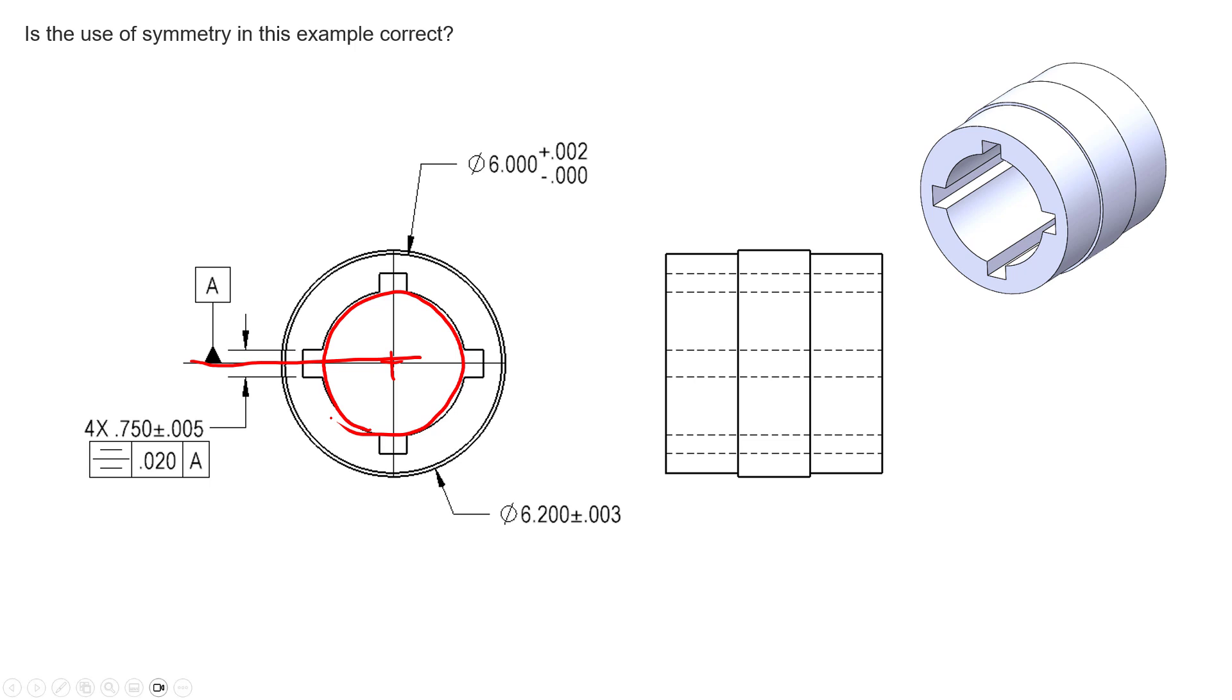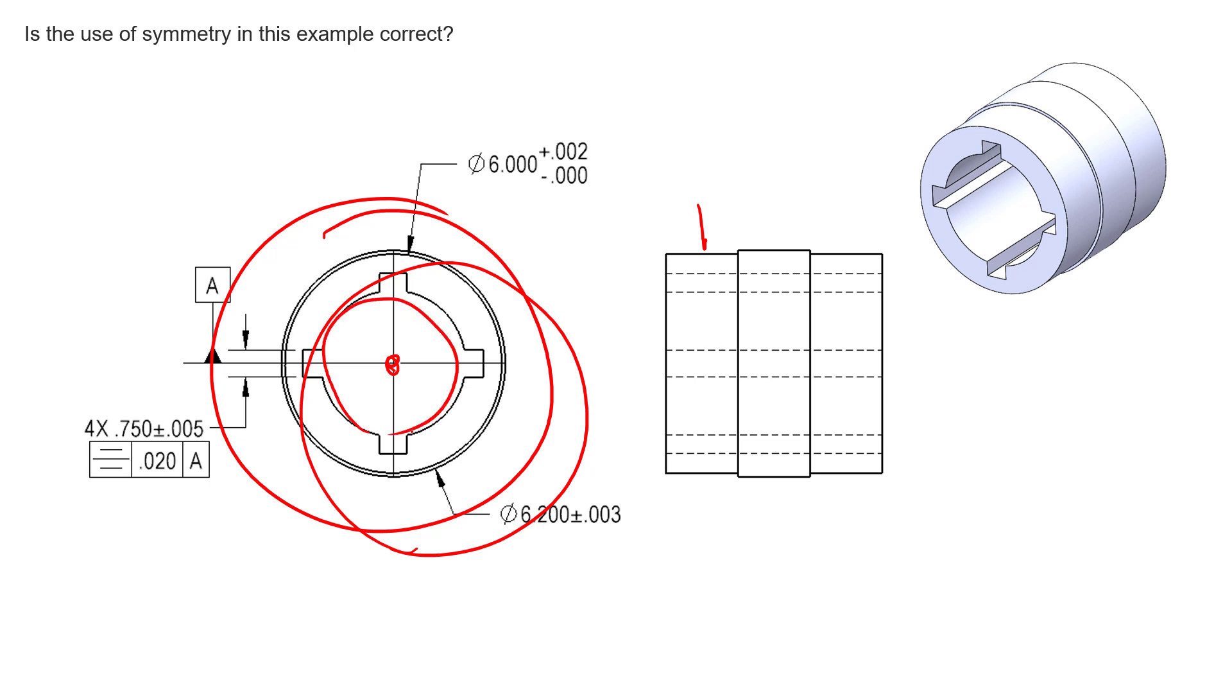There's a lot of features on this part that could create the center axis of this part. And keep in mind, they will all have their own axes. The outside diameter might exist here. The smaller diameters might exist over here. And this small ID might exist right here. So you would have an axis here, you'd have an axis over here, and an axis right here.